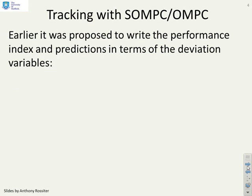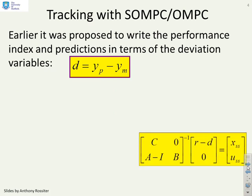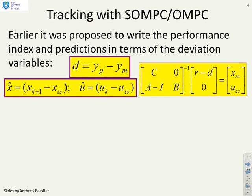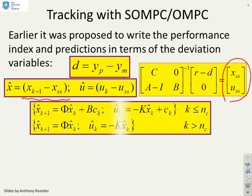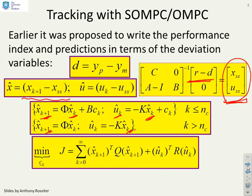How does this apply in a tracking scenario? In an SOMPC or MPC algorithm, we use deviation variables: x-hat as the distance of x from its steady state, and u-hat as the distance of u from its steady state. The steady state can be found from known equations, and predictions are written in terms of these deviation variables. Importantly, these deviation variables implicitly depend on xss and uss, which in turn depend on r minus d. The performance index is then written in terms of deviation variables.